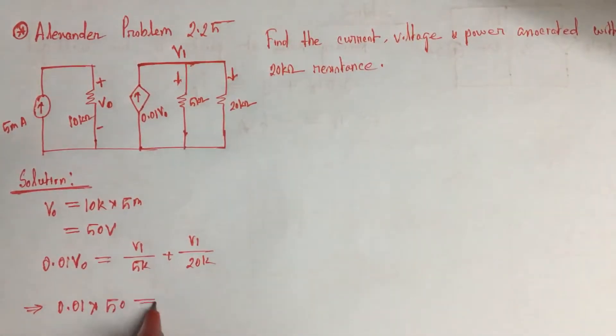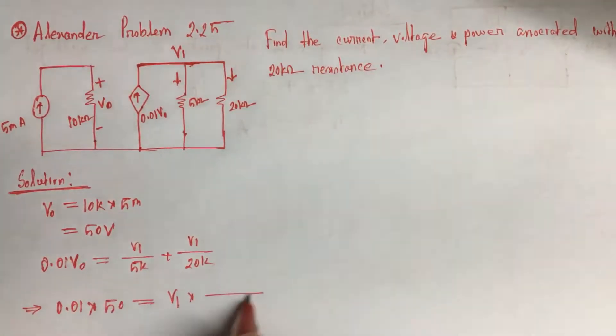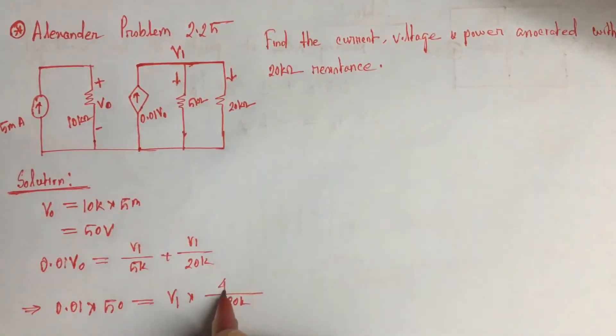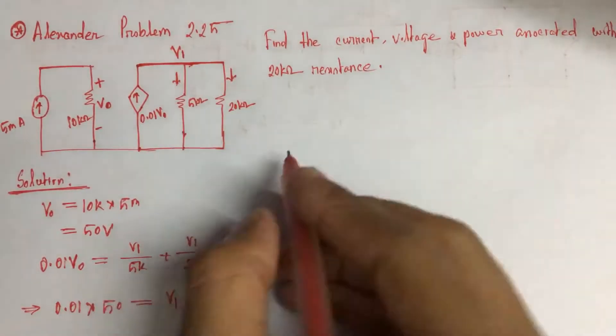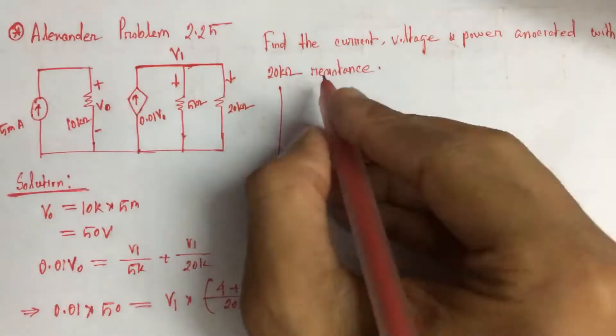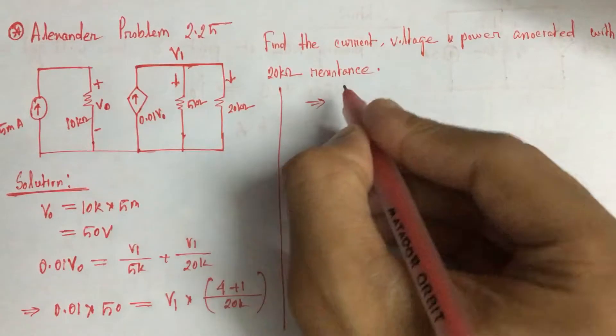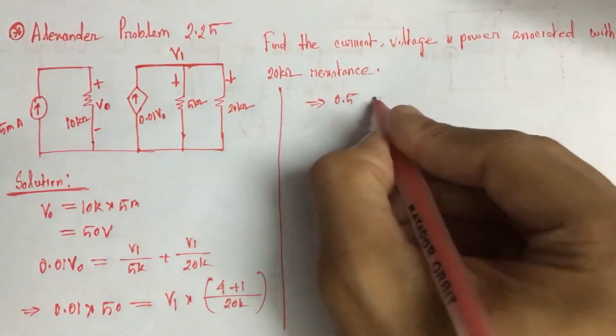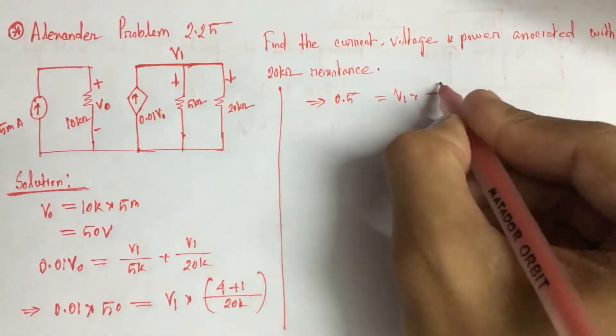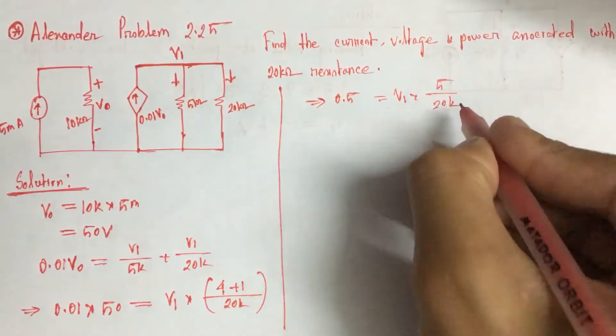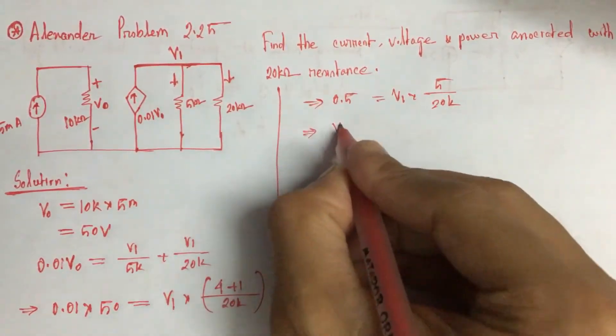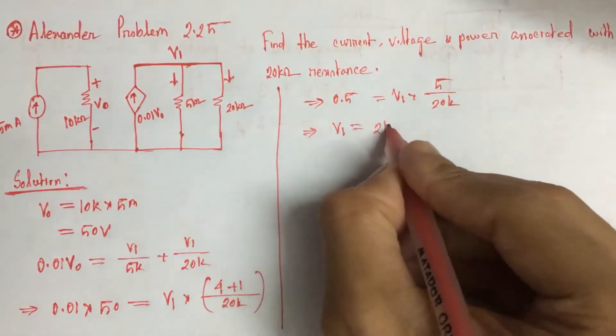So 50 equals V1 into 20 kohm into 4 plus 1. So 0.05 equals 5 by 20 kohm. That is, V1 equals 2 kohm.